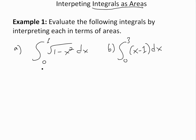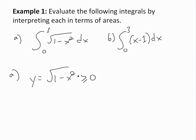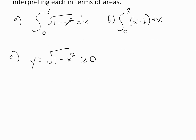Looking at part a, we let y equal to the function inside: square root of one minus x squared. This integral is just the area under this curve, and you can see that y is greater than or equal to zero from zero to one. If you put zero in, you get y equals one; if you put one in, you get y equals zero. So it's always greater than or equal to zero.